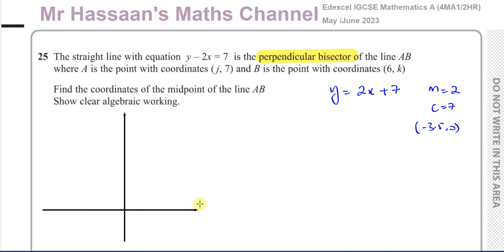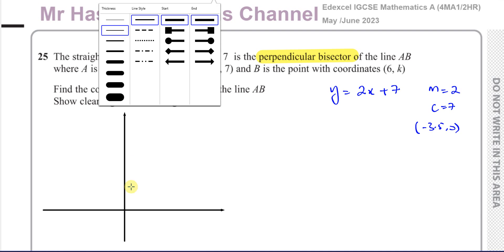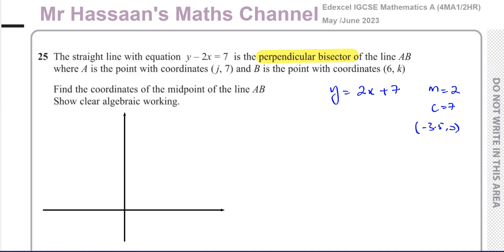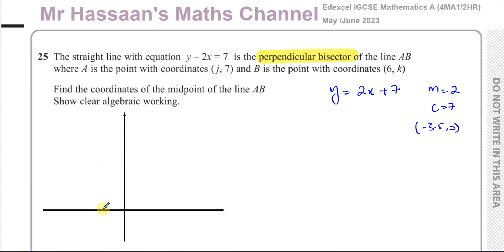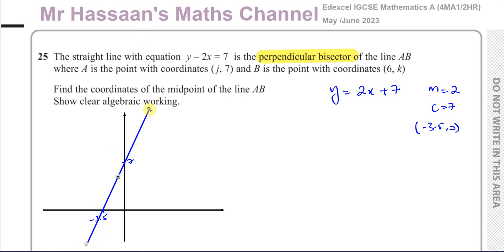I would always advise students to make a sketch to visualize what's happening. So we have this straight line which is going to have a gradient of 2, going through negative 3.5 and 7. I'm not going to draw it to scale, but something like this — it's a straight line, and that's the line which is the perpendicular bisector of the two points they gave us.